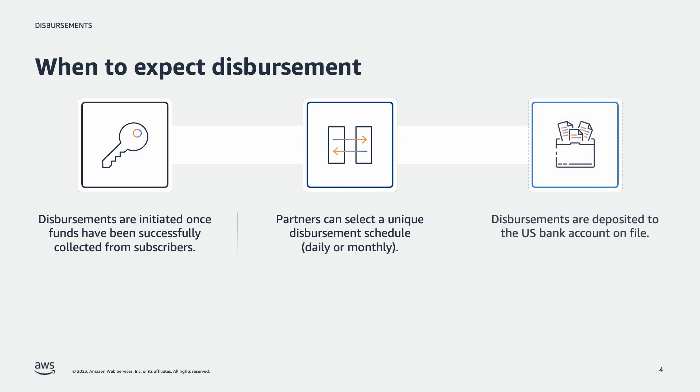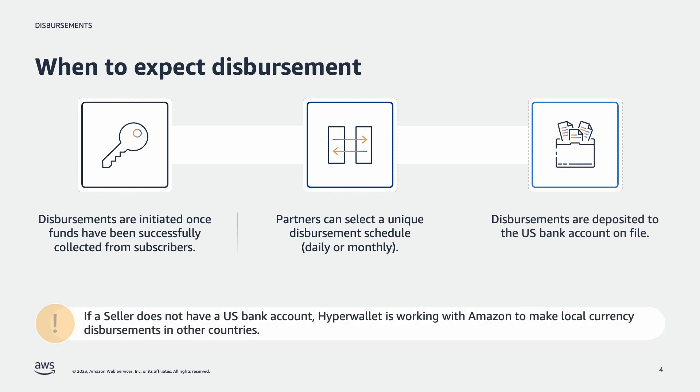Finally, disbursements are deposited to the US bank account on file for the seller minus the listing fee. If a seller does not have a US bank account, HyperWallet is a third party that works with Amazon to make local currency disbursements in other countries.